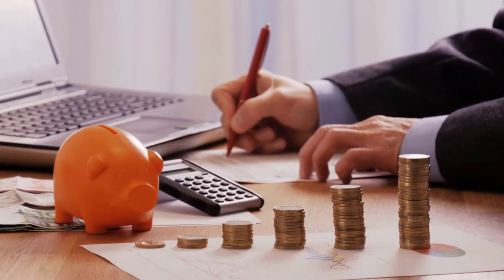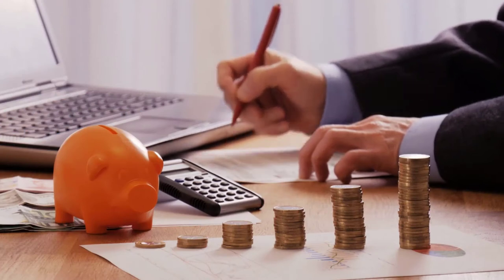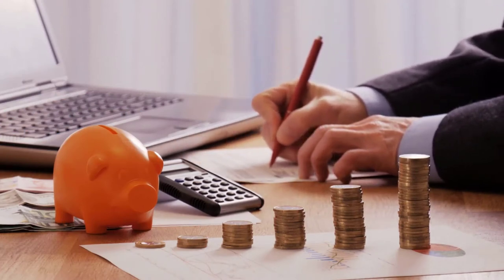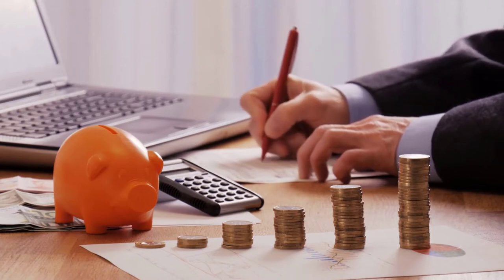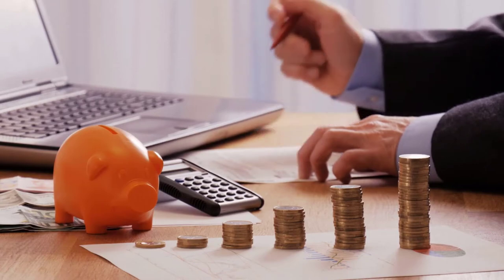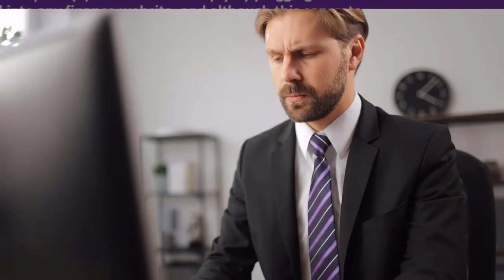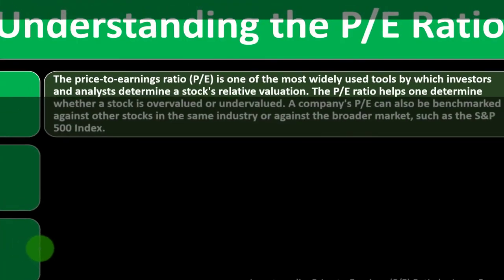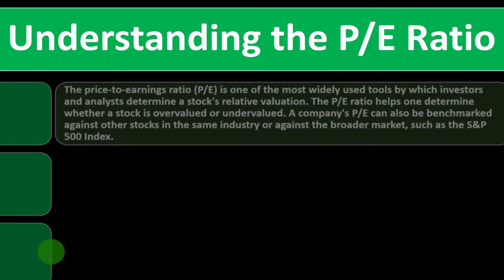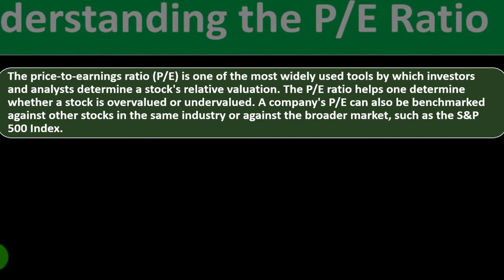Past earnings per share data is reliable in that it's based on actual historical data. But since we're often trying to look toward the future, we might prefer a forward projection from this point in time — more useful for current decision making. We don't know exactly what the future holds, so these two versions of EPS — trailing and forward — form the basis of trailing and forward PE respectively.